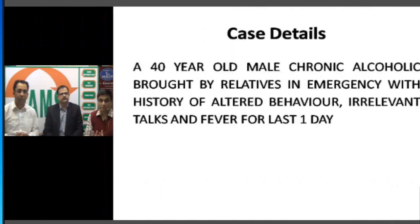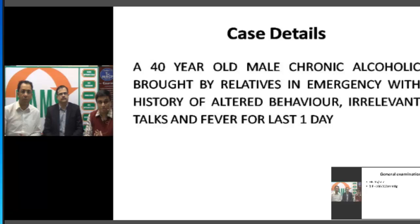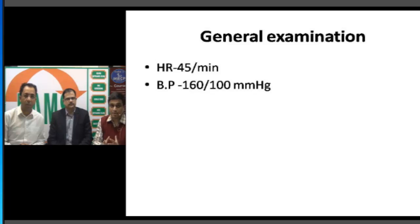Let's take a case history regarding the patient found in the ward with an acute confusional state. The patient is a 40-year-old male, a chronic alcoholic, brought by relatives to the emergency with a history of altered behavior, irrelevant talks, and fever for the last one day. In the past history, the patient was an alcoholic — a substance abuse history — and a short history of fever may have precipitated a problem.